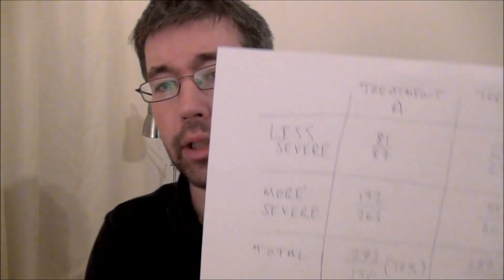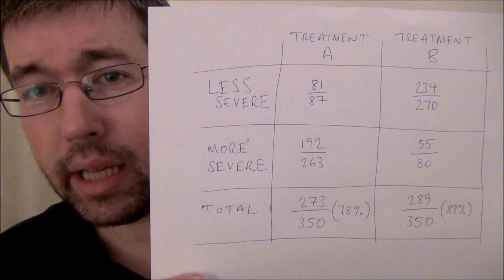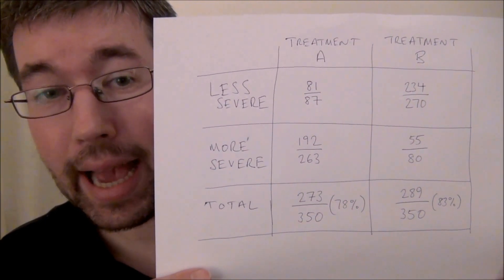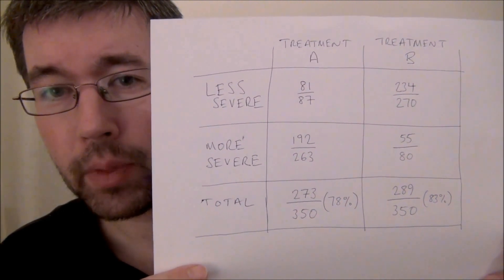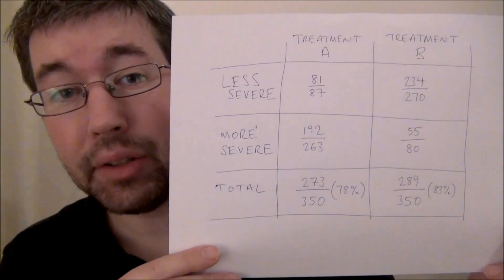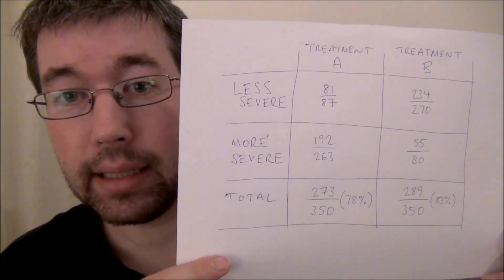Let's imagine there's some medical condition and there are two possible treatments, and you want to know which is the most effective. In this study, we have 350 people getting treatment B, and the results were as follows. Overall, treatment A cured 78% of the total cases, treatment B cured 83% of the total cases, and so it would be logical to conclude that treatment B is the better treatment.